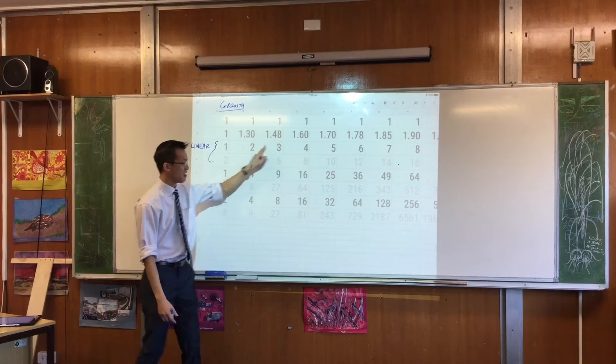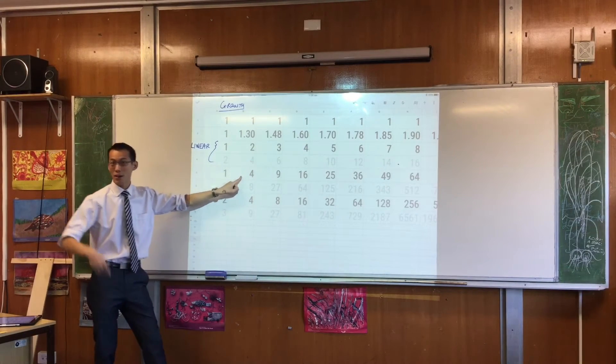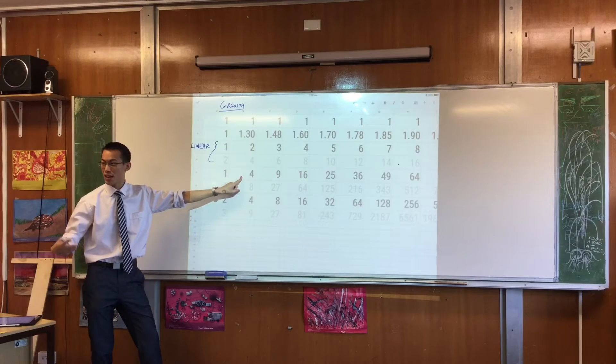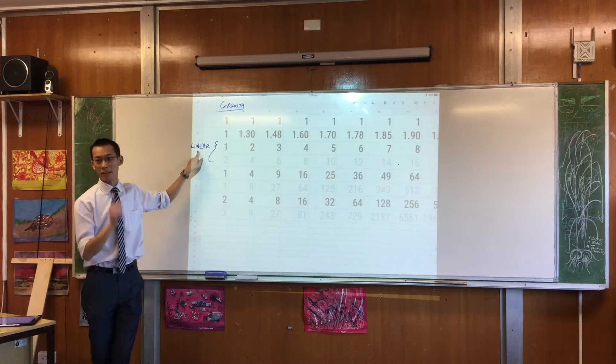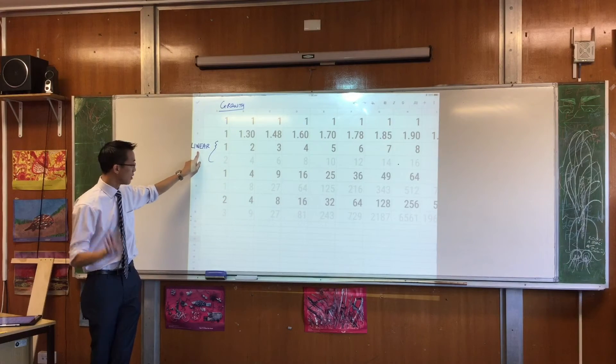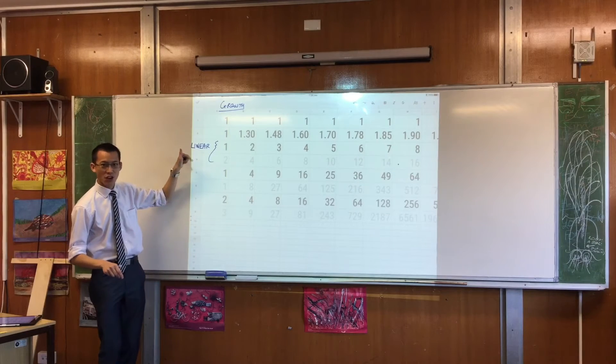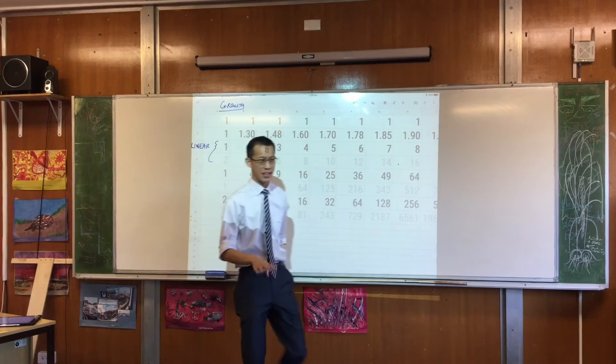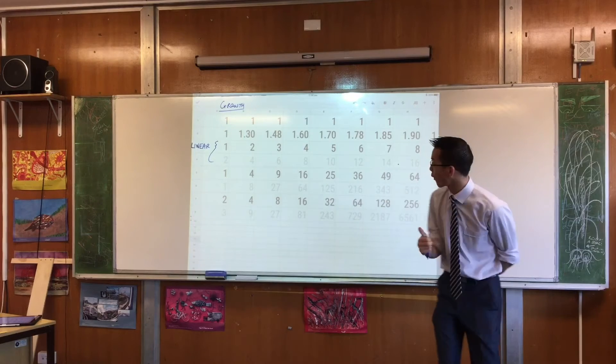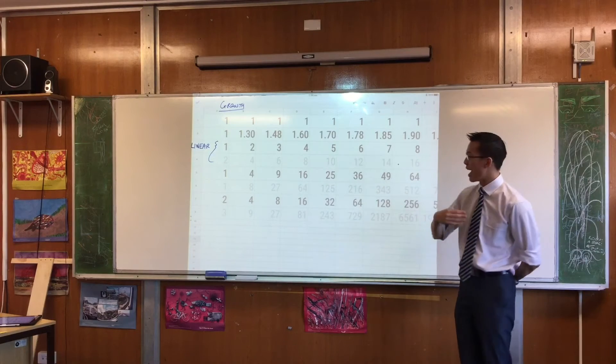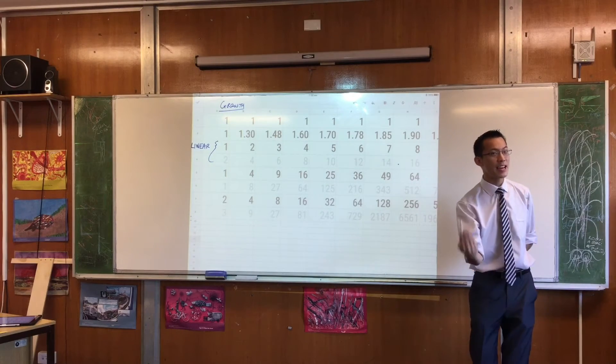I guess this is y equals x, this is like y equals 2x, y equals 3x, 4x, 5x, 100x. They're all straight lines. Does that make sense? Okay, let's go back up the rows here and see if we can understand what's going on. Linear growth, it grows steadily and it never speeds up, it never slows down.